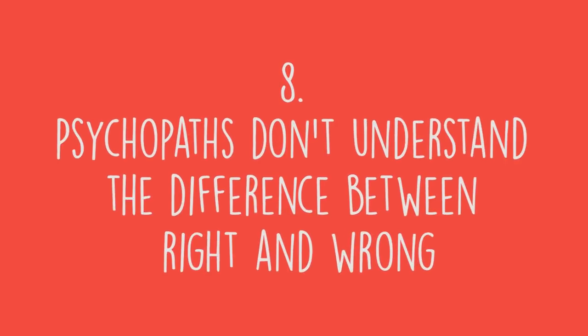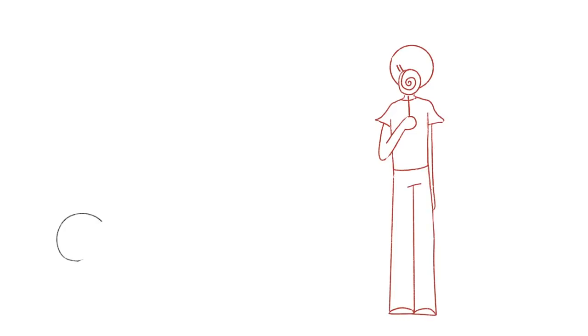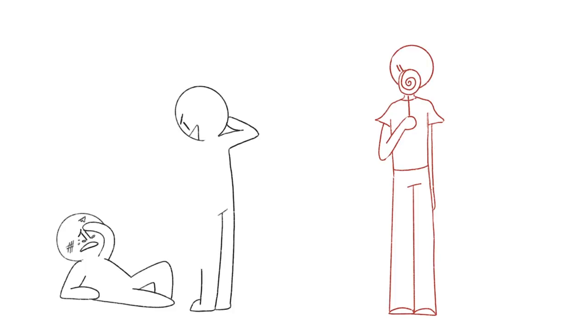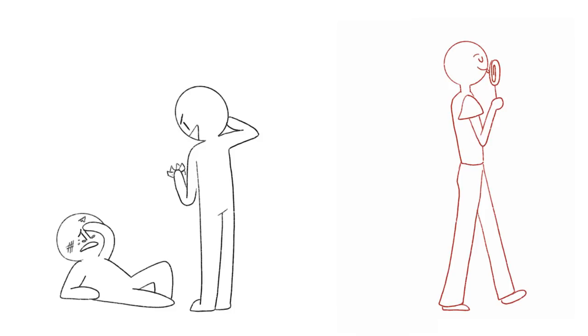Number eight: Psychopaths don't understand the difference between right and wrong. The thing about psychopaths is that they do have a clear understanding about moral principles. They just have an inability to care. According to the Psychopathy Checklist, or PCL, that psychologists use to assess psychopathy, the individual is callous and lacks empathy for others. While the normal person often feels disgust towards unethical actions that keeps them from committing them, psychopaths, on the other hand, have a high capacity for disgust and aren't affected as much.